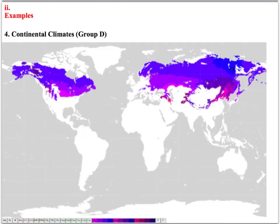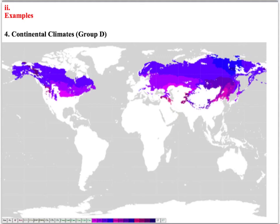The next one we'll talk about is continental climates. Here's Minnesota — that's what we are. Minnesota is a continental climate. It's interesting to note that there are no continental climates in the Southern Hemisphere. Even though there's significant land in the Southern Hemisphere, it's not significant enough — you need a massive continent to generate a continental climate. Hot, humid summers and cold, freezing winters.